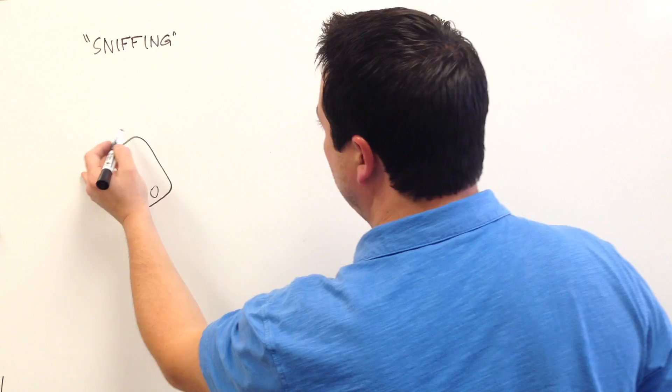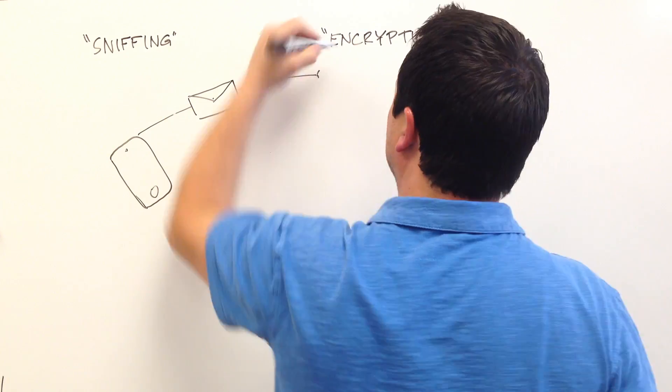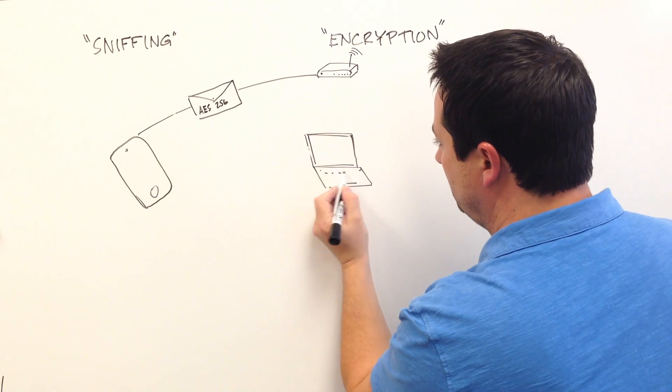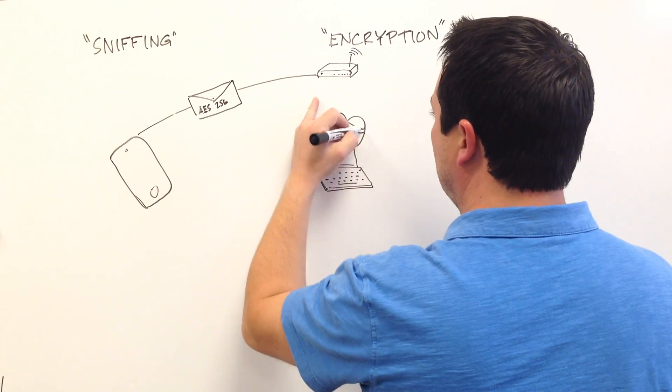The computer prepares the message by encrypting it according to the algorithm and key. As it travels through the air, the attacker may still capture the data, but without the key, he won't be able to decrypt it.